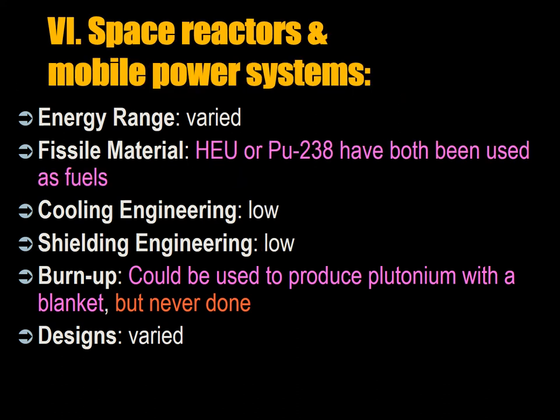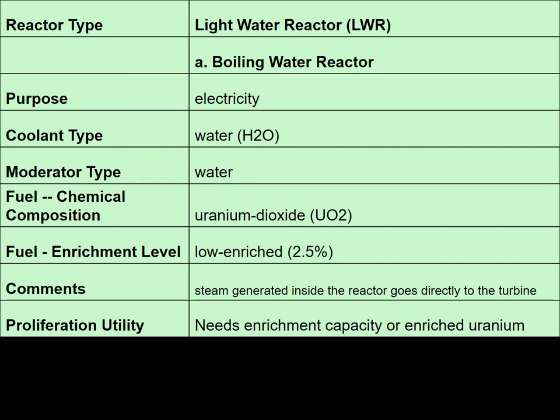Sixth, there are space reactors and mobile power systems, typically using HEU (highly enriched uranium) or plutonium-238, which generates a lot of heat and is therefore useful. These are different reactor designs with various components — light water reactors include boiling water reactors and pressurized water reactors.